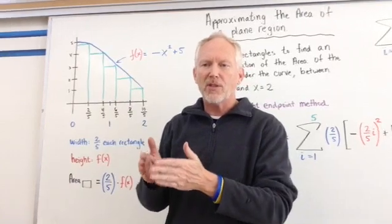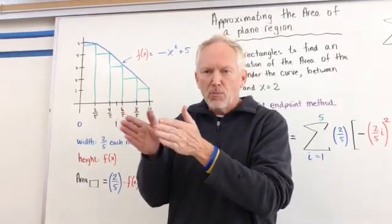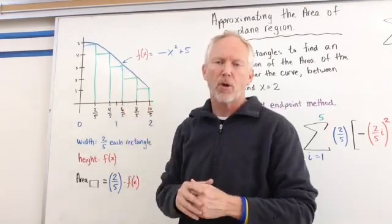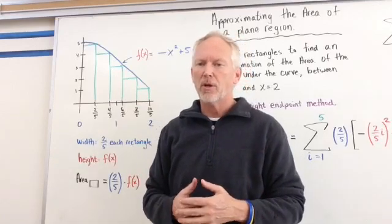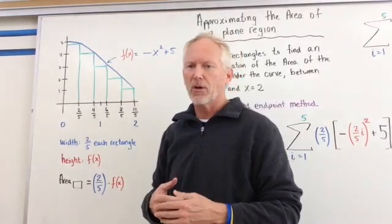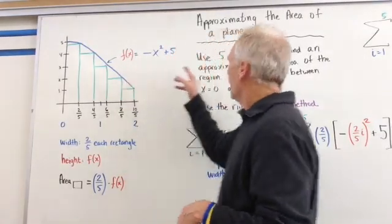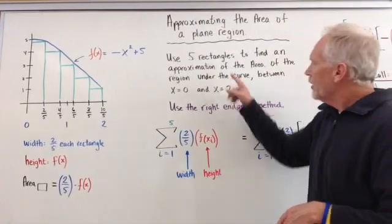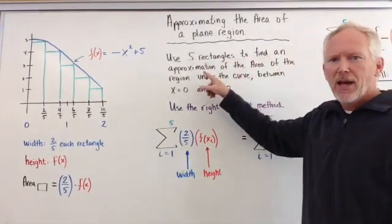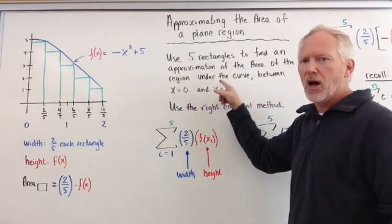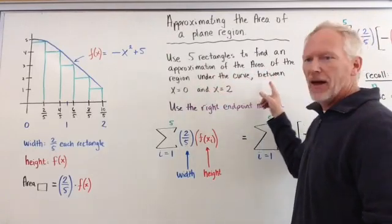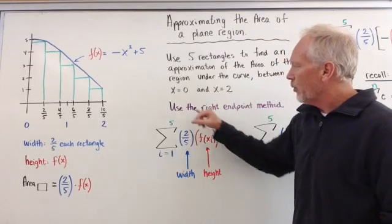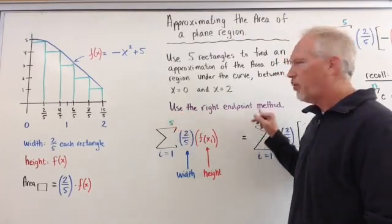Theoretically, as we get smaller and smaller rectangles, we can get a closer and closer approximation. This is a basic example we might see in a textbook. The question says: use five rectangles to find an approximation of the area of the region under the curve, between x equals 0 and x equals 2. And we're going to use specifically the right endpoint method.